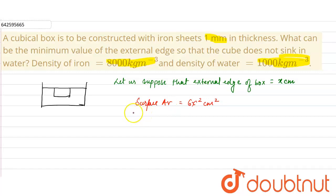The volume of the box will be 6x² times the thickness, which is 0.1 cm, giving us 0.6x² cm³.